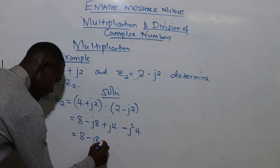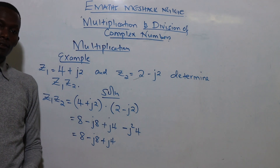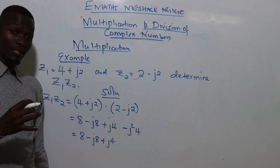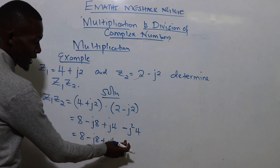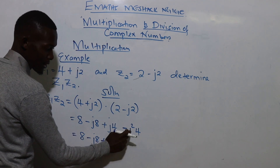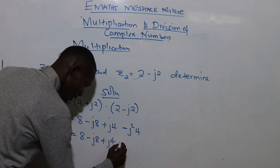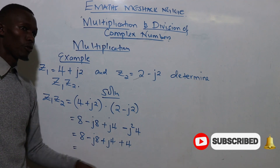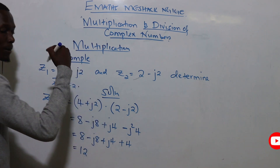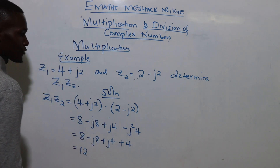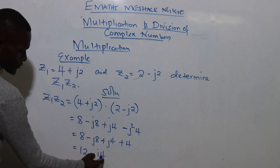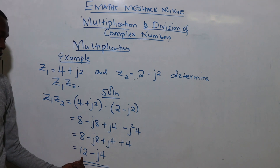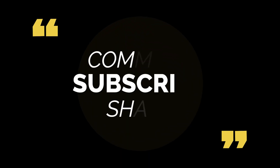So we have 8 minus j8 plus j4, and then negative j²·4. Since j squared equals negative one, replacing it: negative times negative one gives positive, so the last term becomes positive 4. Taking real terms together: 8 plus 4 equals 12. Taking imaginary terms: minus j8 plus j4 equals negative j4. Therefore z1·z2 = 12 − j4.